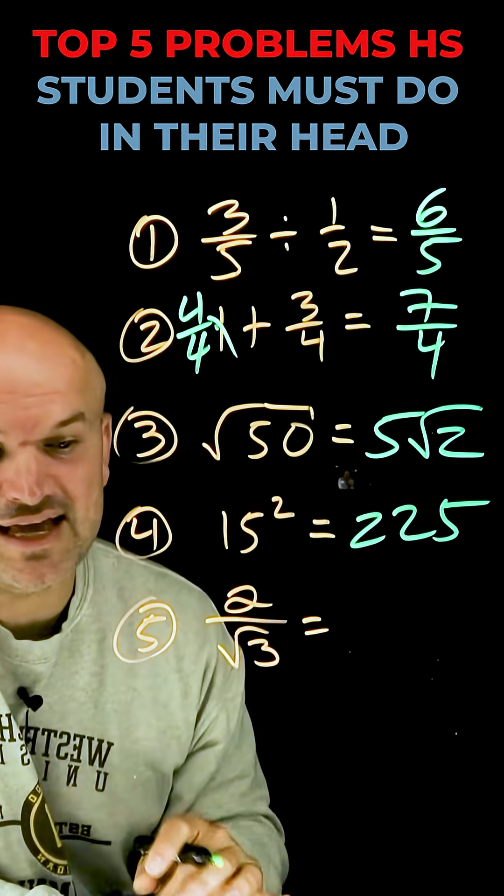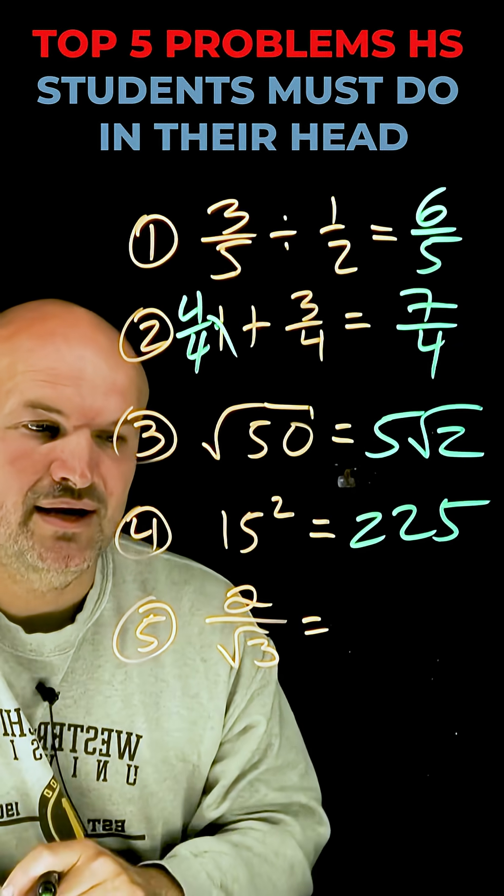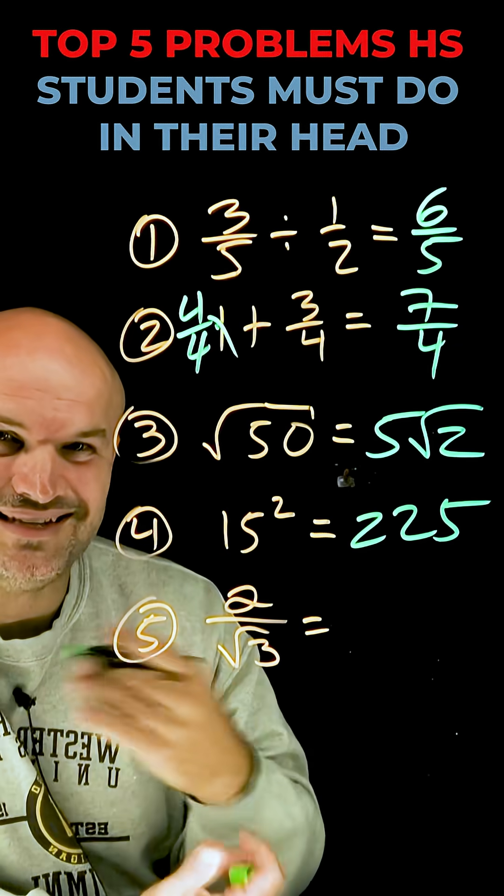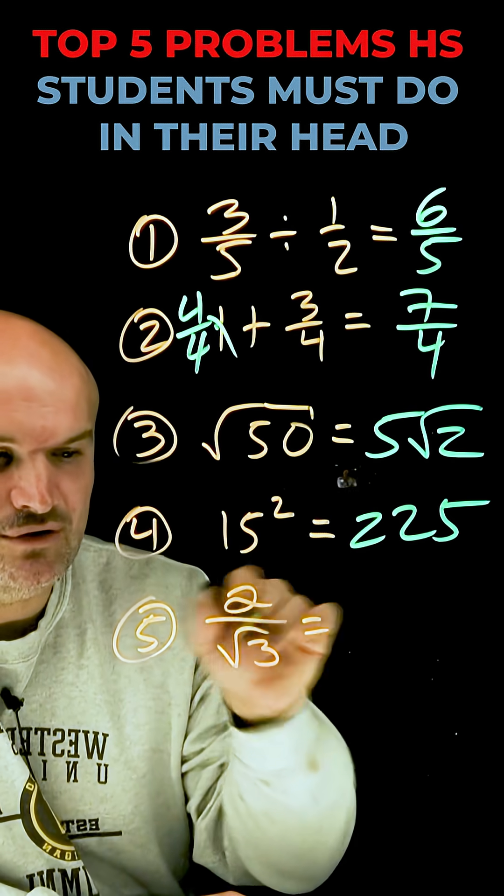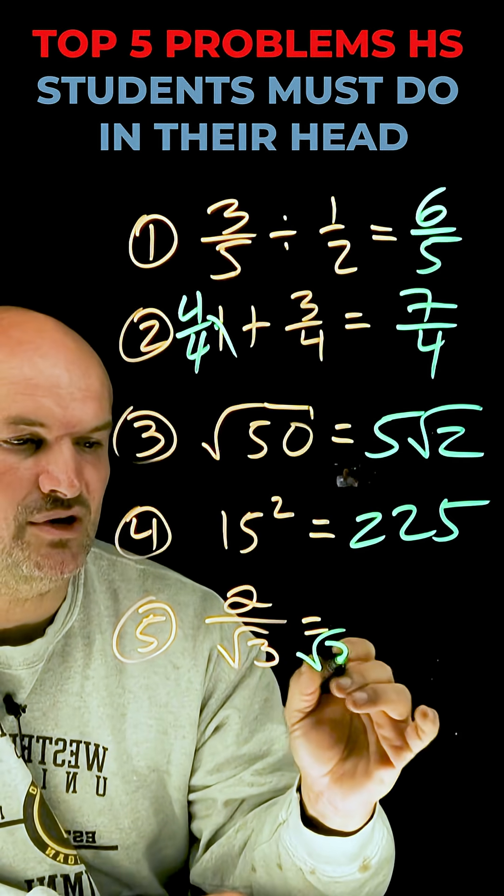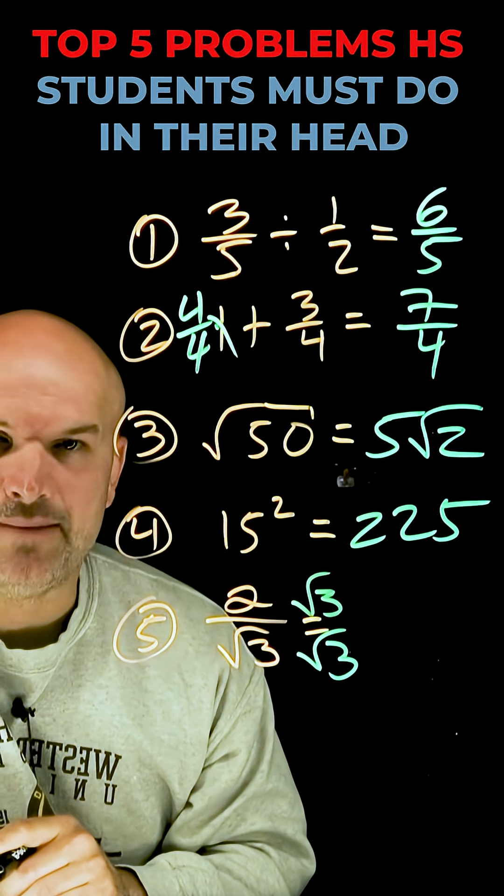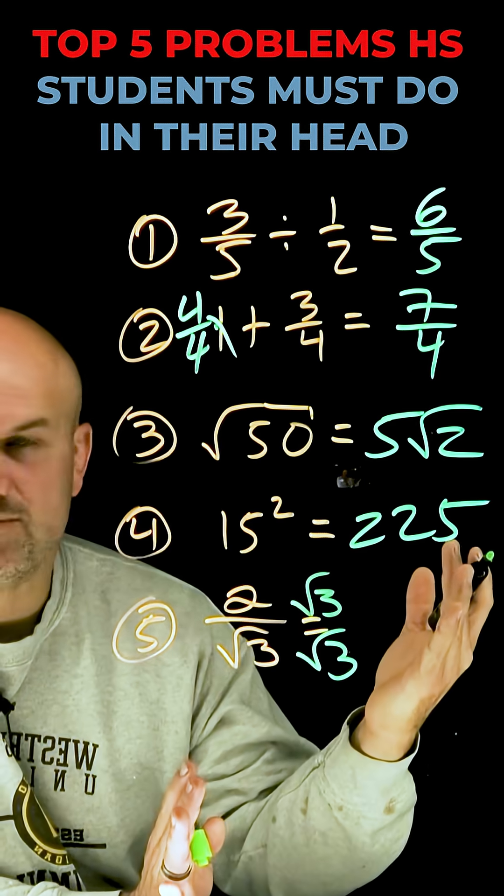Simplifying radicals is a process that you should be very accustomed to. Once you do a little practice of this, it's not too bad to do this in your head. We know to get the radical off the denominator, I need to multiply by the square root of 3 on the top and the bottom. So now we can simply multiply straight across.